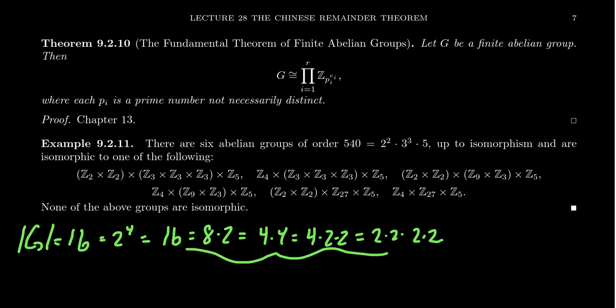Associated to each of these factorizations of 16, and now these are going to be factorizations involving only powers of 2, of course, we then are going to get the factorization of the group. So for example, the first one right here, we could have the group Z16, right? That's a cyclic group of order 16.